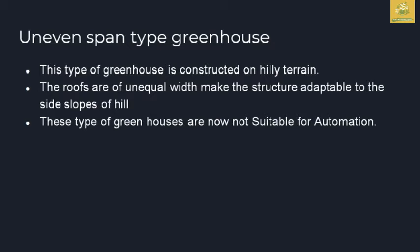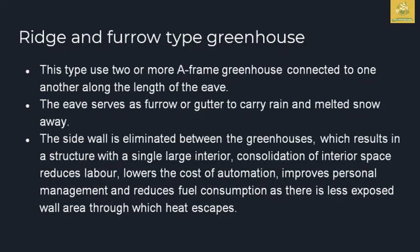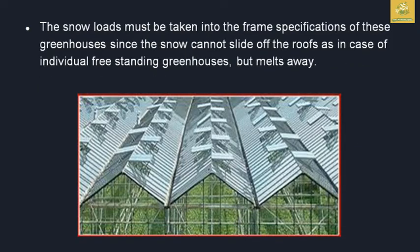The even-span type greenhouse structure has an unequal structure surface, and the greenhouse provides maximum use. This is the uneven span greenhouse with a ridge and furrow region. It has a 2 to 3 frame structure, where the gutter acts as a furrow to collect rain and melted snow. This is a continuous greenhouse structure with a central wall.